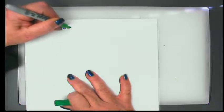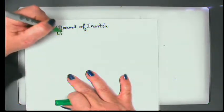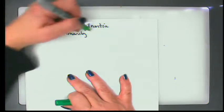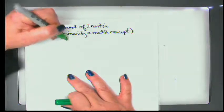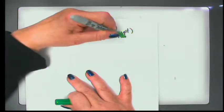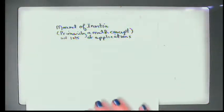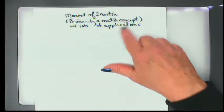The first thing we're going to do today is start talking about Chapter 9, and the topic of Chapter 9 is moment of inertia. A moment of inertia is primarily a mathematical concept, but there are lots of engineering applications. It's a common question to ask what a moment of inertia is — it's not a difficult question to answer, but it's one that has a variety of application-based answers.